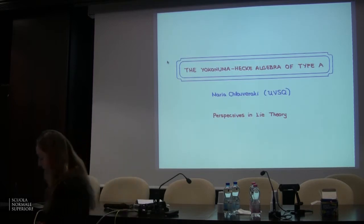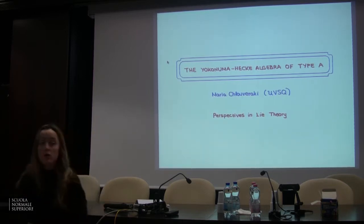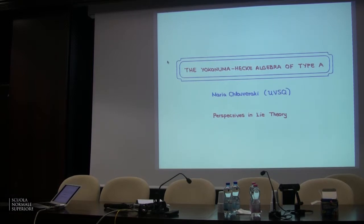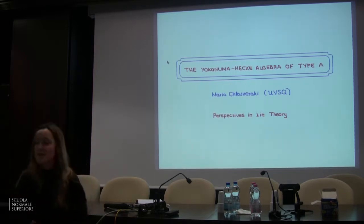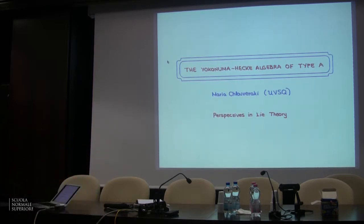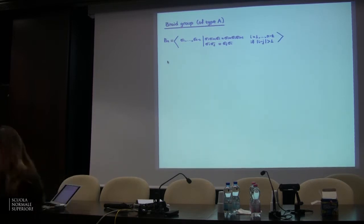I discovered these algebras a couple of years ago from topologists who are using the Yokonuma-Hecke Algebra to obtain invariants for knots. Since this was the way I was introduced to these algebras, this is the way I'm going to introduce you to these algebras. So I'm going to start with the braid group of type A.